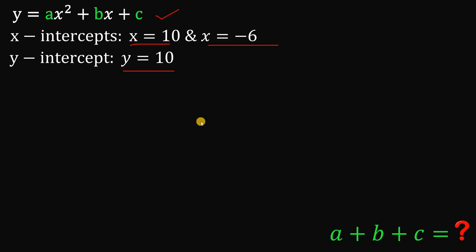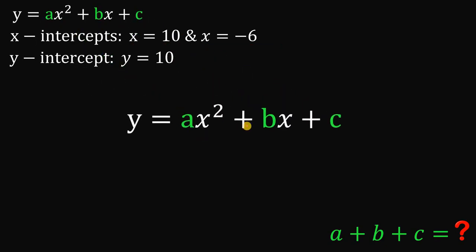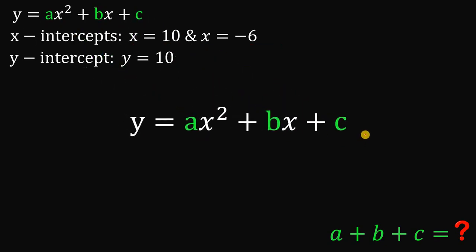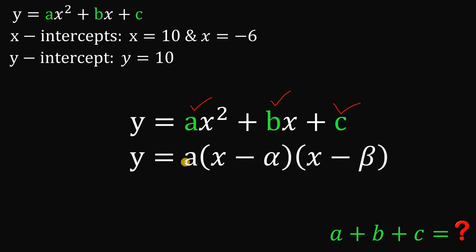Now let's get the equation. We have y equals ax squared plus bx plus c, and our goal is to find the value of a plus b plus c. To answer this question, we will use another form of this quadratic equation: y equals a multiplied by x minus alpha, multiplied by x minus beta, where alpha and beta are the roots of the quadratic equation.